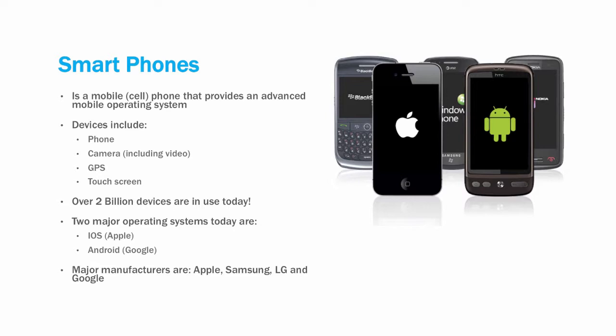Several years after the introduction of the laptop computer, smartphones began to dominate the market. These devices are cell phones that provide an advanced mobile operating system. Smartphones provide the following basic capabilities: a phone, a camera — which usually includes HD video as well — a GPS, a touchscreen, and many other functions. The growth in the adoption of these devices has been nothing short of amazing. In fact, there are over 2 billion devices in use today. Most of the cell phones in use today are based on the iOS operating system from Apple or the Android operating system from Google.